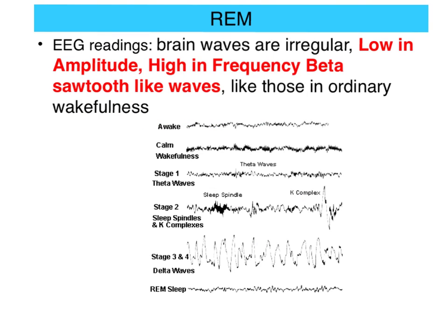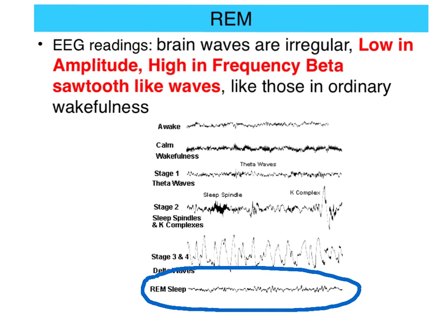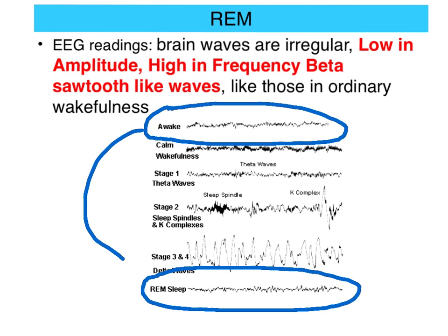When describing EEG readings, you need to do this in terms of frequency and amplitude. In terms of EEG readings during REM, the brain waves are irregular, low amplitude, high frequency — sawtooth, beta-like brain waves, very similar to those of ordinary wakefulness.